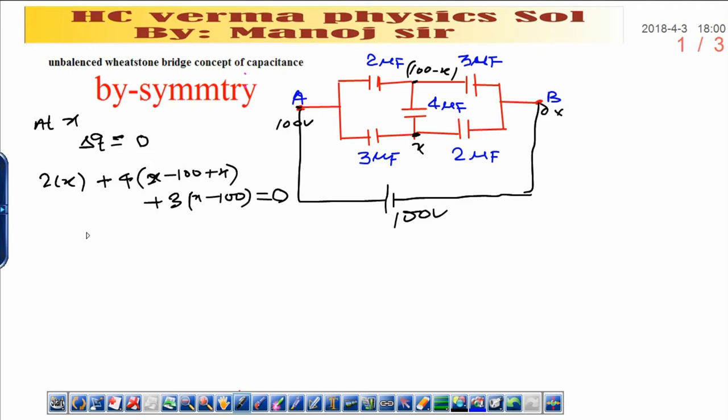10x plus 3x, that is 13x. Now this will be 13x which is equal to 400...